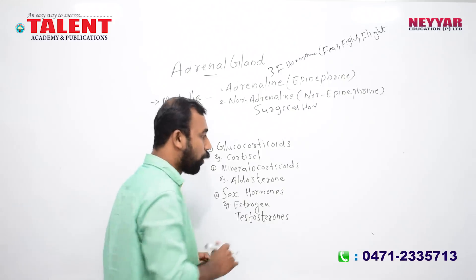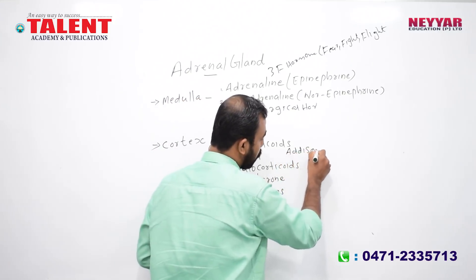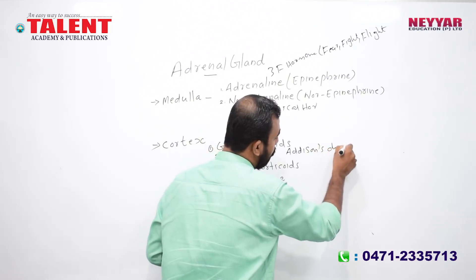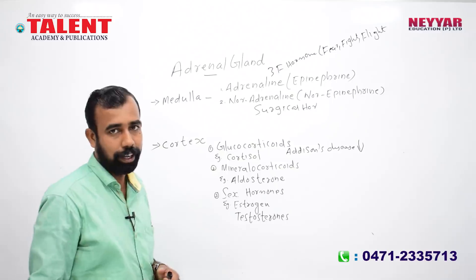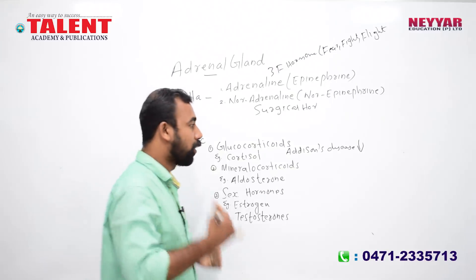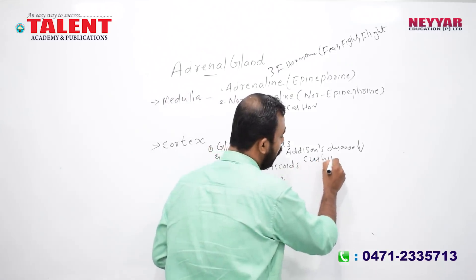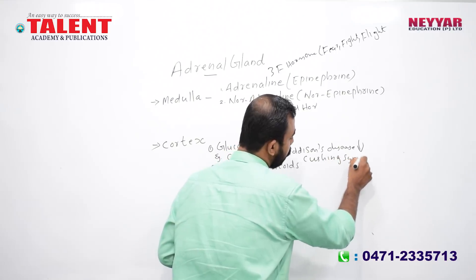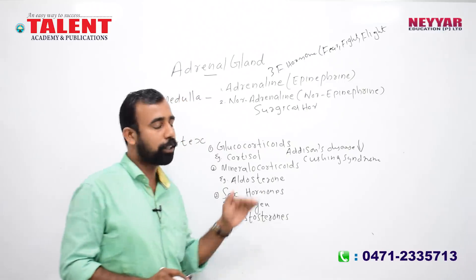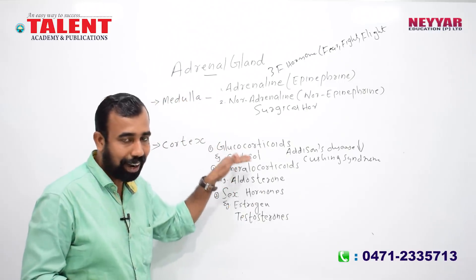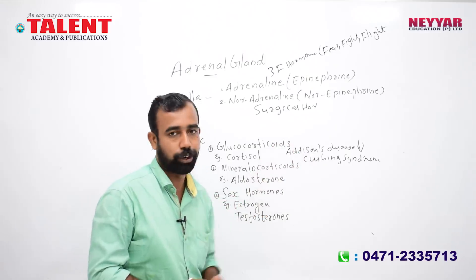Another condition related to cortisol is Addison's disease. In exams, the deficiency of cortisol is called Addison's disease, and the excess of cortisol leads to Cushing's syndrome. In the presence of protein, fat, glucose, and hormonal imbalance, it can result in Addison's disease.